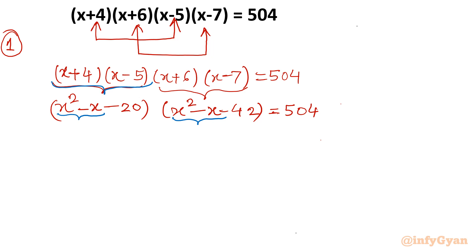If you cross-verify with other bracket groupings, you won't get the similar x² and -x terms. So the key point is: now we will use the substitution x²-x = t.